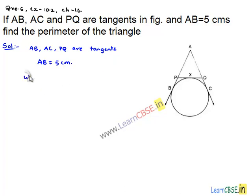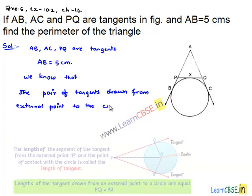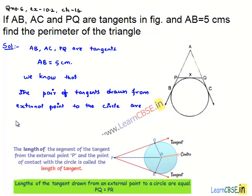We know that the pair of tangents drawn from an external point to the circle are equal in length.